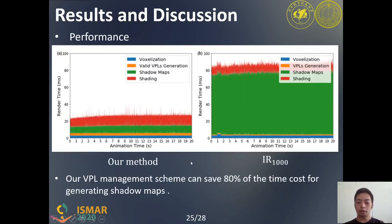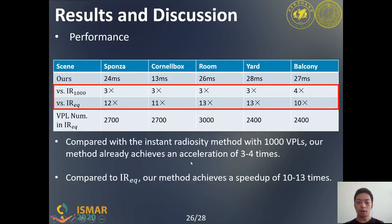This figure visualizes the time spent on each step for the scene using our method and Instant Radiosity. Thanks to our VPL management scheme, our method can save 80% of the time cost for generating shadow maps. This table shows the frame running time of our method and the speedup versus Instant Radiosity. Compared with Instant Radiosity with 1,000 VPLs, our method achieves an acceleration of 3 to 4 times by using more VPLs. IRI-equal achieves similar MSE values in the foveal region to our method, but compared to IRI-equal, our method achieves a speedup of 10 to 13 times.